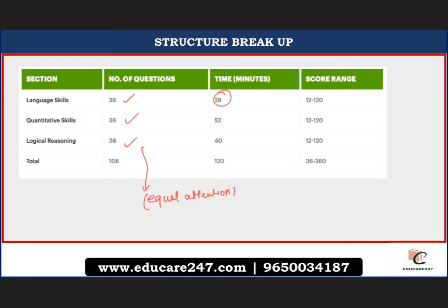The change in question distribution gives only one indication: you have to focus on each and every topic equally. You cannot ignore any section. In NMAT you have to clear individual sectional cutoffs as well as the overall cutoff. Now that question numbers are equal across sections, I expect the level of difficulty to step up in subjects where questions were previously reduced. We are anticipating the change and are completely ready for it.